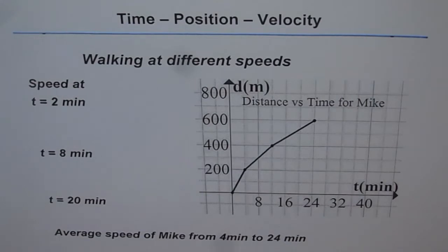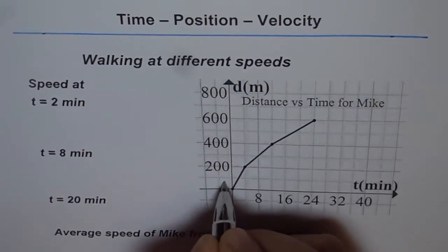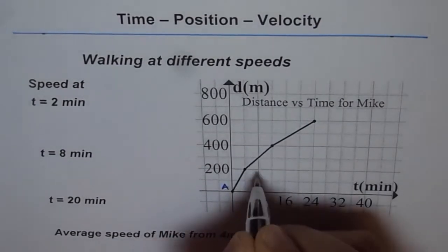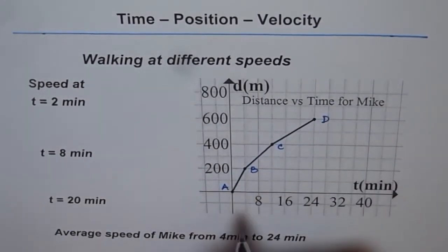From a distance versus time graph we can always read the position, and we can read directly distance and time. Let's mark the points or the positions — A, B, C, and D — and then read time and distance for each position.